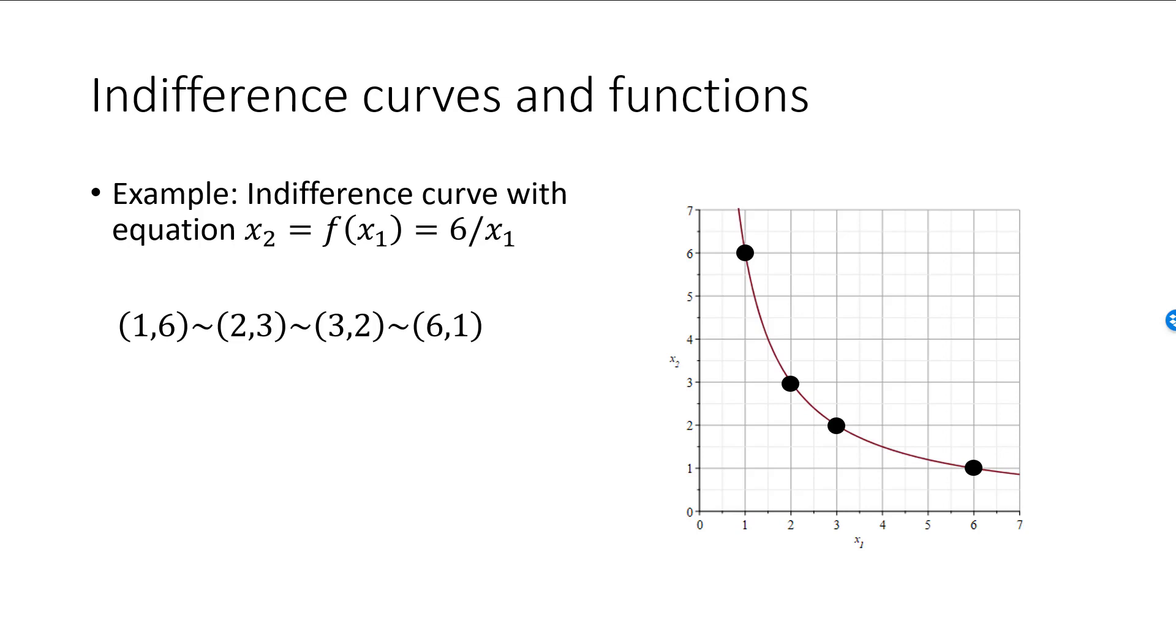I can pick x1 to be any positive number, and plugging this number into the function will give me a bundle on the red indifference curve. We can also conclude, for example, that the bundle (2, 4) is strictly preferred to (2, 3) and all the bundles on our indifference curve, since it is above and to the right of our indifference curve.